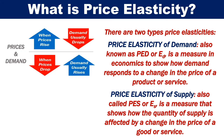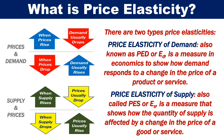Price elasticity of supply, also called PES, is a measure that shows how the quantity of supply is affected by a change in the price of a good or service. When supply rises, prices usually drop. When supply drops, prices tend to rise.